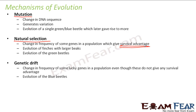The third mechanism is genetic drift — again a change in frequency of some genes in a population, but this time the genes do not have any survival advantage; they are just lucky. The best example is the evolution of blue beetles. Green and blue beetles existed together, and there was actually a survival advantage to being green. But suddenly an animal came and stamped on all the green beetles, killing them. The blue beetles were lucky and survived, so their number increased. That is genetic drift.